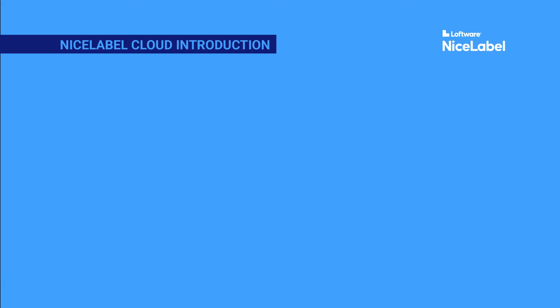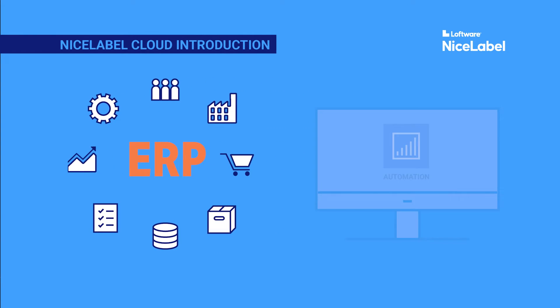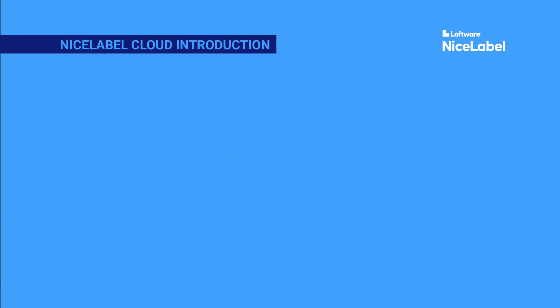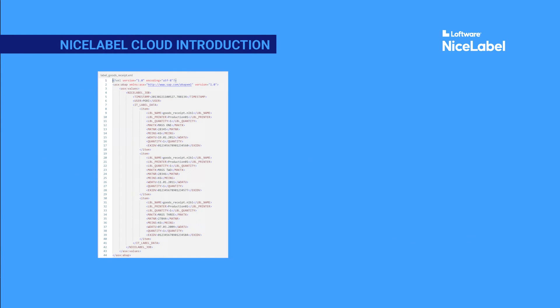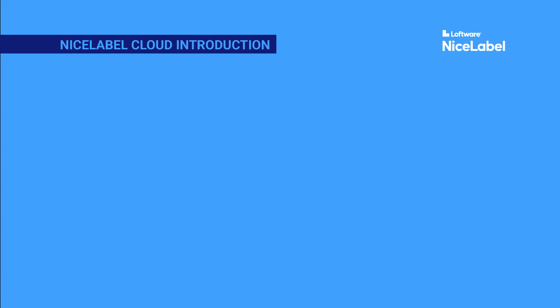You can integrate your company's ERP system with NiceLabel Automation, a Windows program that makes it easy for your IT team to tap into your existing systems and data. Automation can apply your ERP data to labels you design automatically, so you produce accurate, always-on-track labels without human intervention or manual data entry.